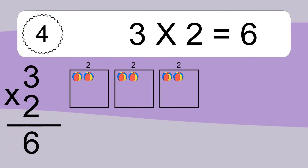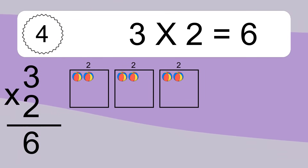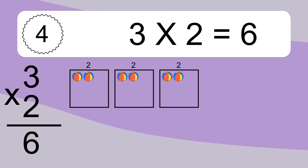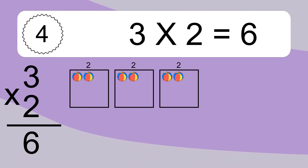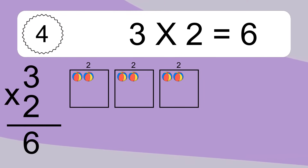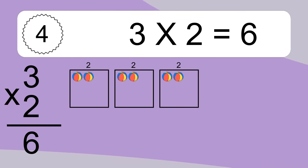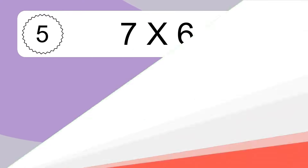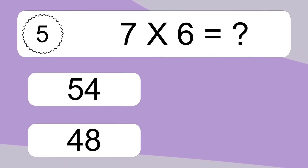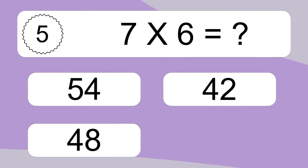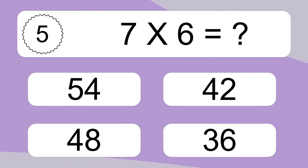We have 3 boxes and each box has 2 colorful balls inside. If you count all the balls in all the boxes together, you will have 3 times 2 balls. This equals 6 balls.